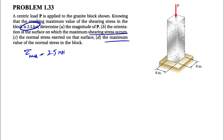If we want to find the magnitude of P for part A, we first have to find the orientation on which the maximum shearing stress occurs. We know that when P is perpendicular to the surface, there is no shearing force, and therefore no shearing stress. So let's figure out the orientation first.